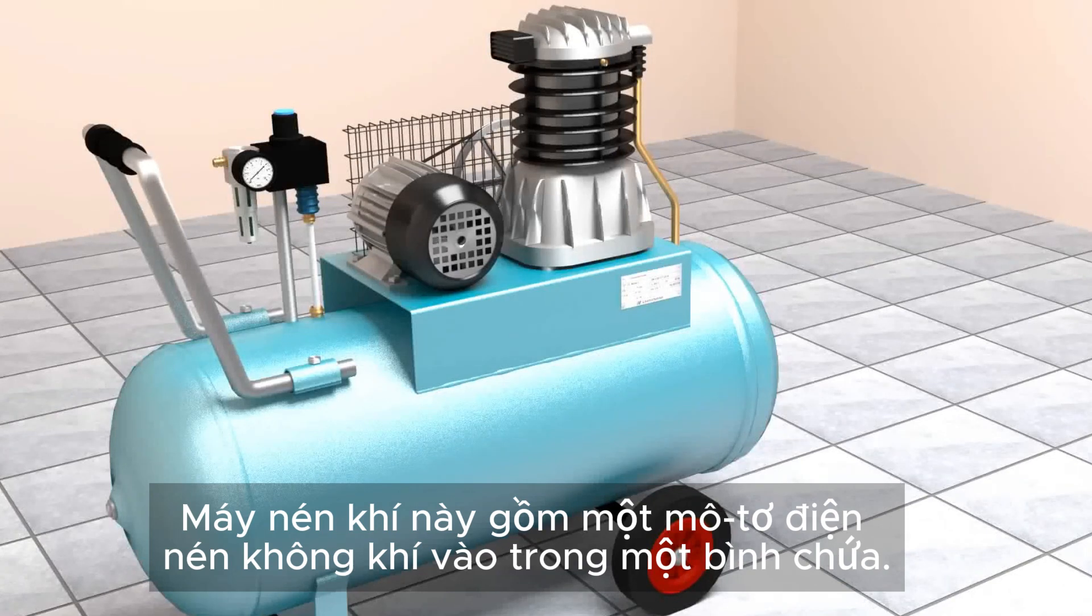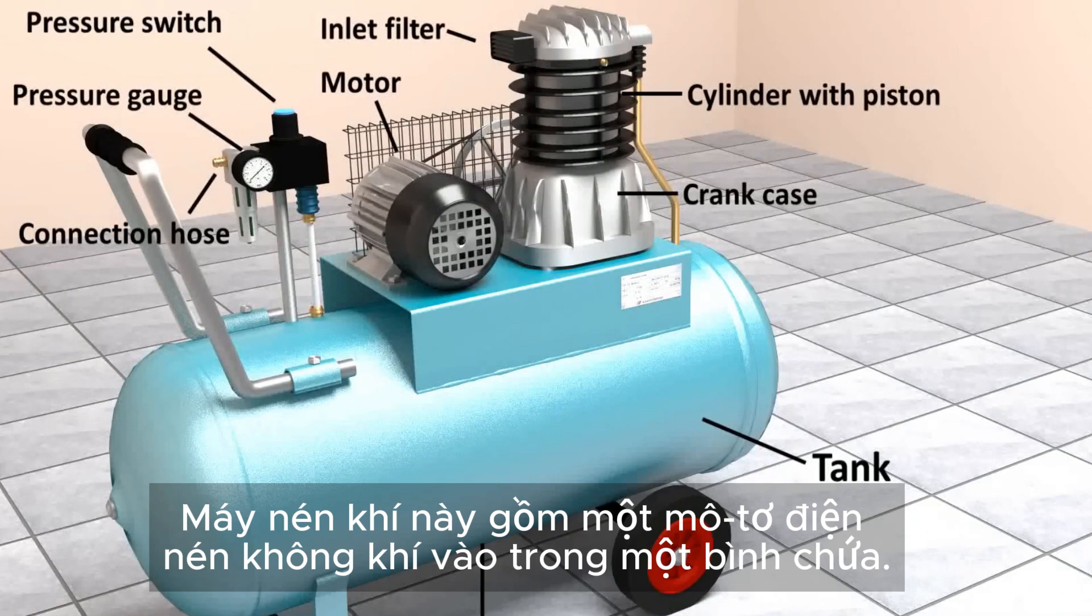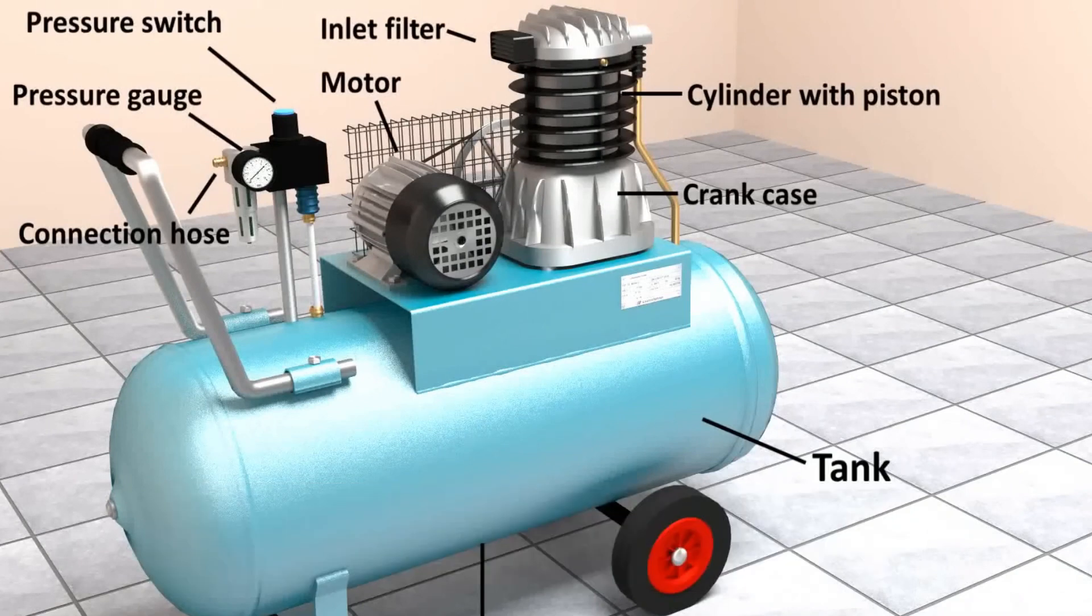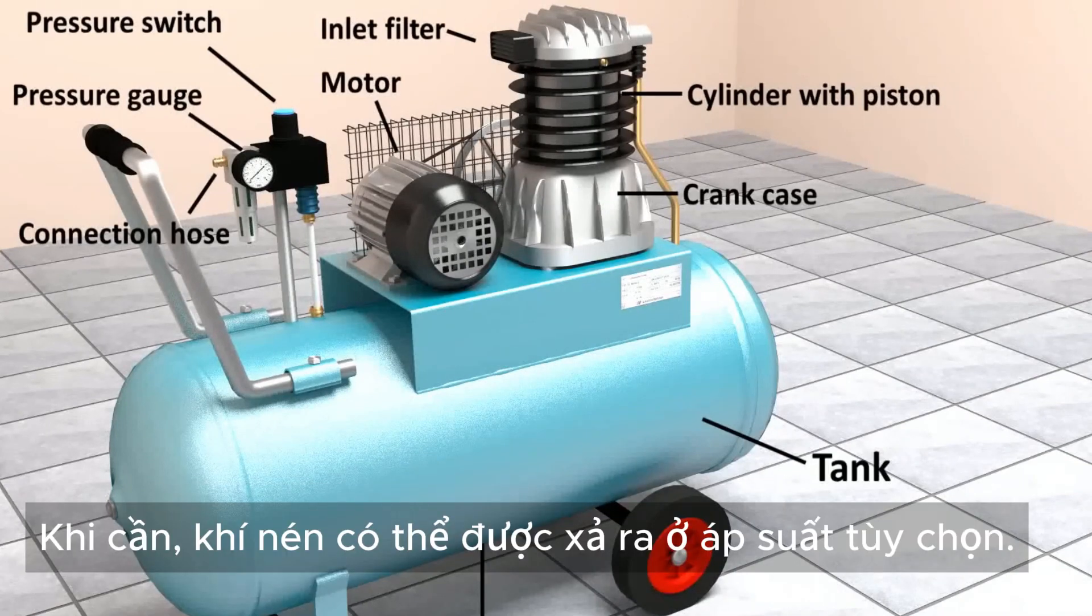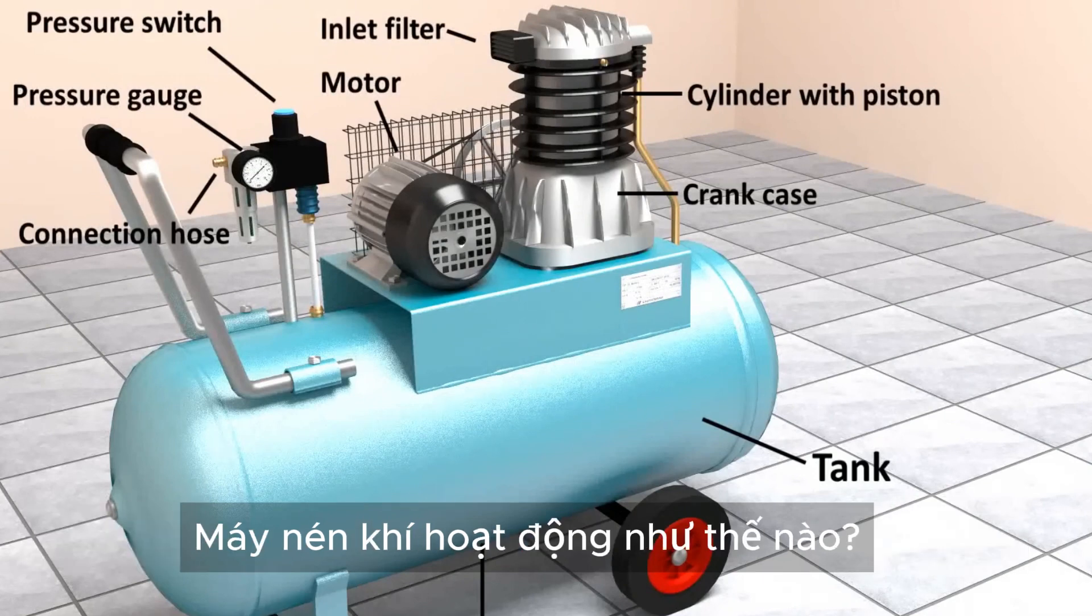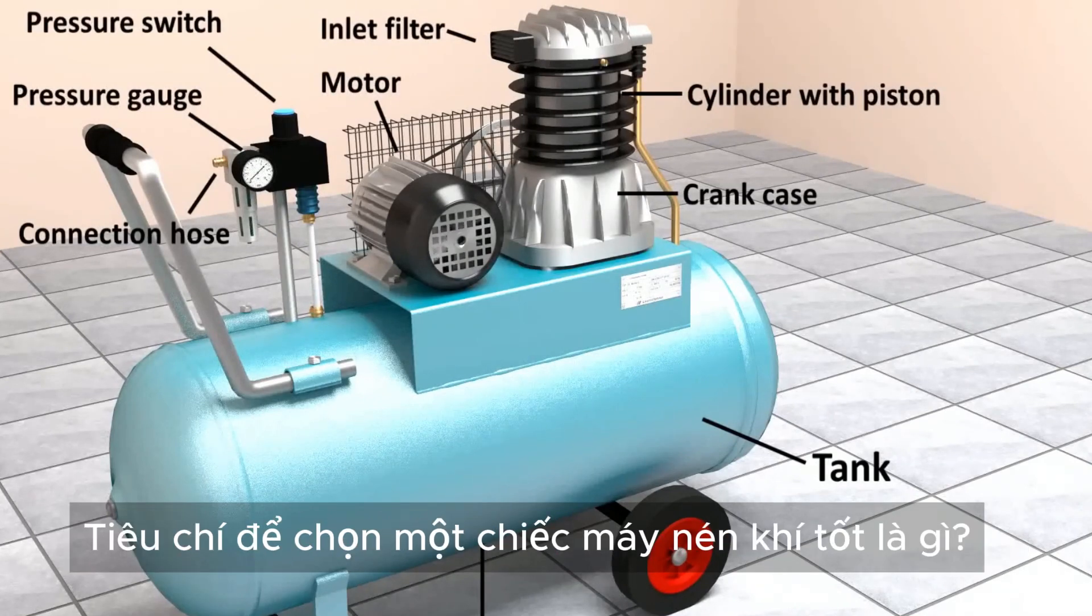This air compressor consists of an electric motor that compresses air into a storage tank. The compressed air can be released at chosen pressure when required. How works an air compressor? What are the criteria for selecting a proper air compressor?